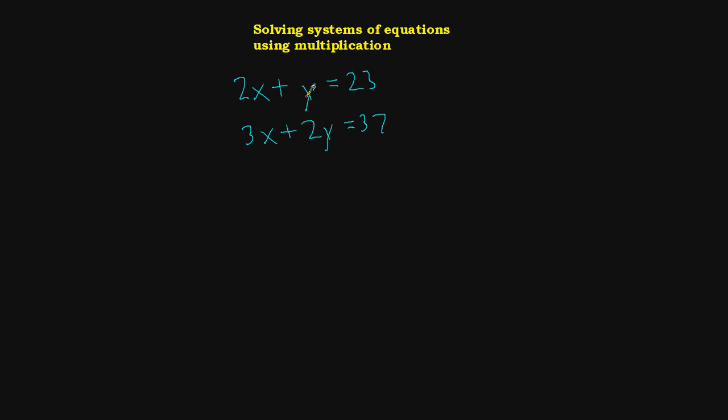I'm going to go ahead and try to make it so that I can get rid of the y's. And what I think would be nice is if I had a negative 2 in front of this y, then I could have negative 2y plus 2y, and that gets rid of the y's. So I'm going to go ahead and multiply the entire top equation by negative 2.